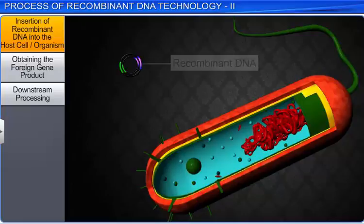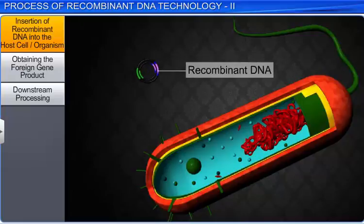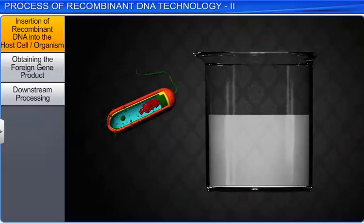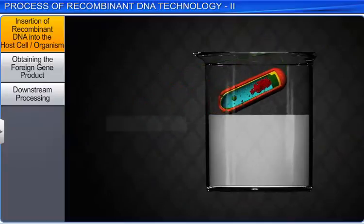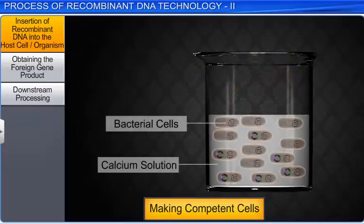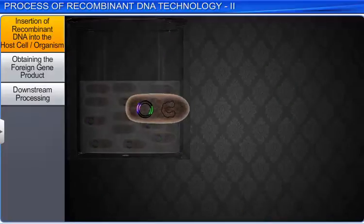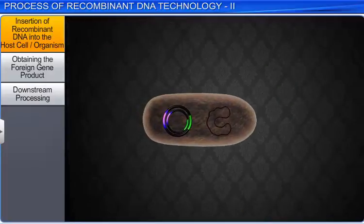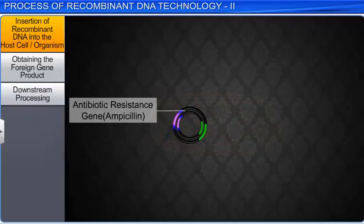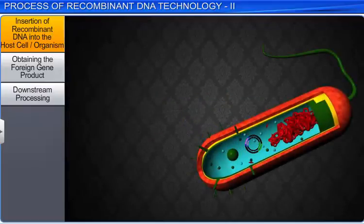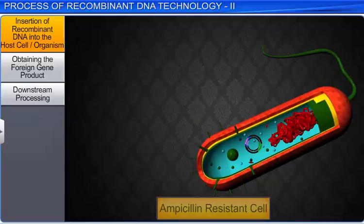Insertion of recombinant DNA into the host cell is one of the most challenging steps, as first the bacterial cell has to be made competent to receive the DNA. If we consider the insertion of a recombinant DNA bearing a gene for ampicillin resistance into the host cell E. coli, the host cells will become ampicillin-resistant.